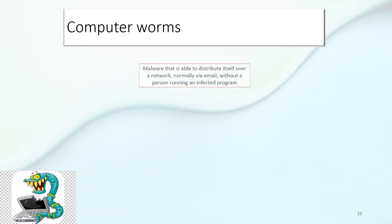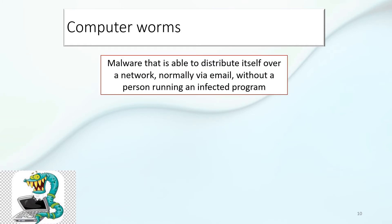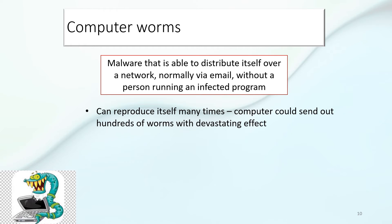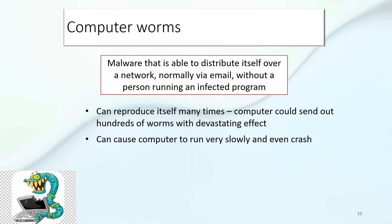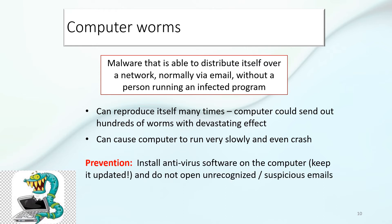Computer worms: this is malware that is able to distribute itself over a network, normally via email, without a person running an infected program — it just infiltrates itself onto your computer. It can reproduce itself many times, sending emails out to other computers which also get the worm. Worms take up all of the hard drive space and can cause your computer to run very slowly and even crash. To avoid it, install an antivirus and keep it updated.